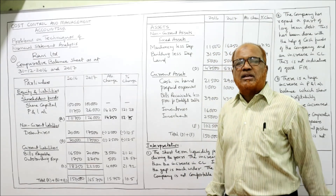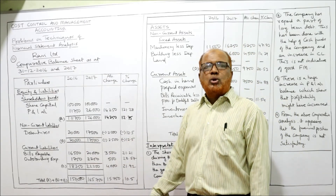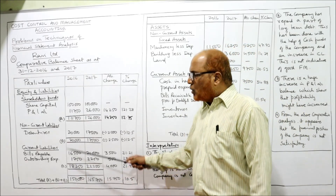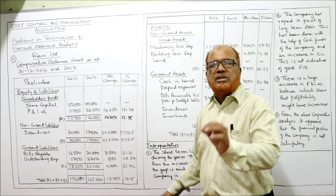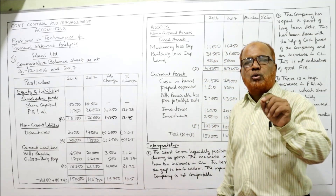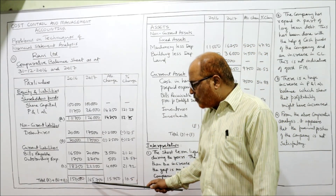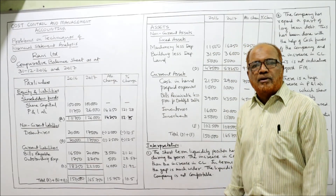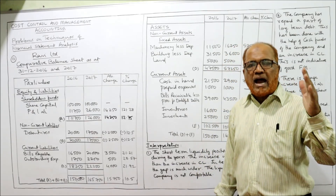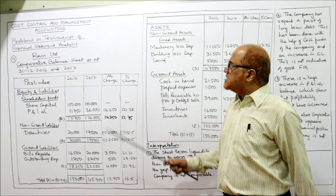Non-current liability consists of only debentures, denoted as B. Current liabilities consist of two items: bills payable and outstanding expenses, denoted as C. Total of A plus B plus C gives the liability side total: last year 1,50,000, current year 1,65,750. Assets are divided into non-current assets (fixed assets) and current assets. Three fixed assets are given: machinery, building, and land.